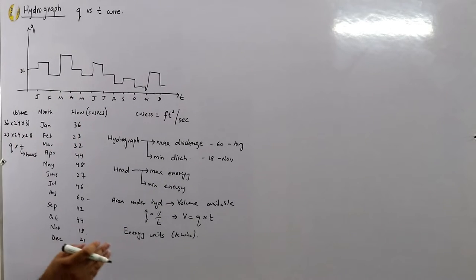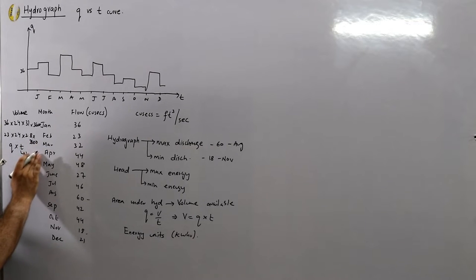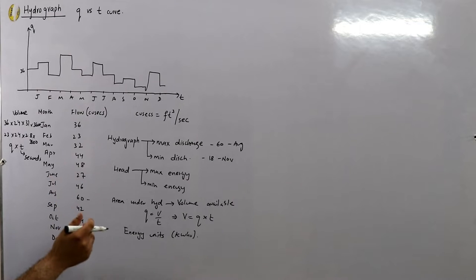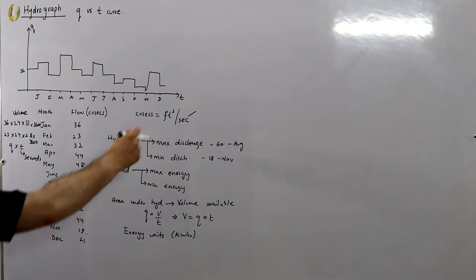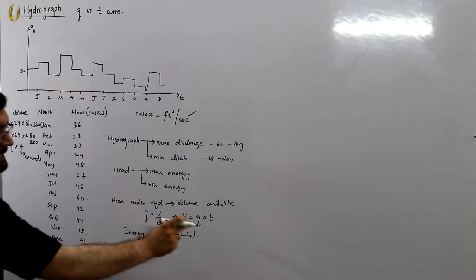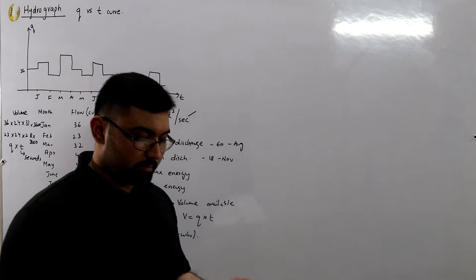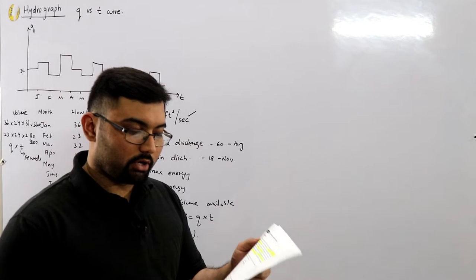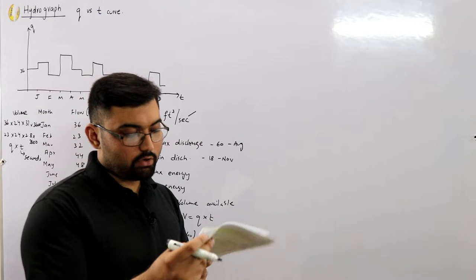The time is in seconds, not hours — I made a mistake earlier. You must multiply by 3600 as well, because the unit is cubic feet per second, so to eliminate seconds you need time in seconds. This gives you the available volume for each month.